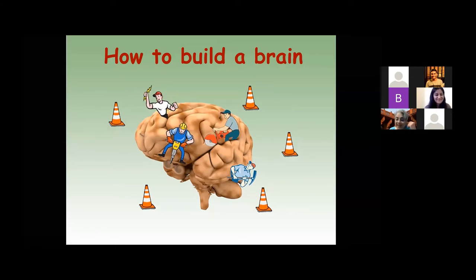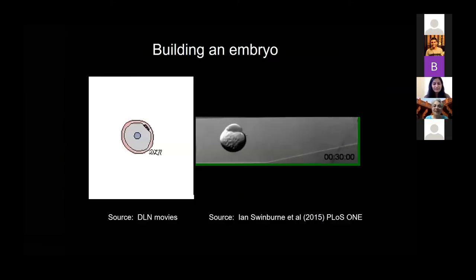The brain has to be grown from one cell. Much as the brain fascinated me right from when I was in the 12th standard, the development of it gripped me even more. The brain functions because of how it develops. Development is what allows the brain to wire up and bring about its function — development is everything. If development goes this way or that way, all of a sudden the brain function has changed.